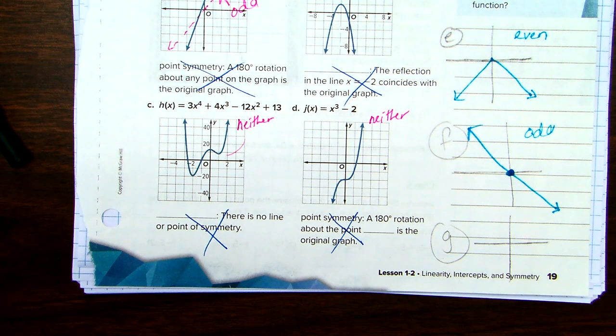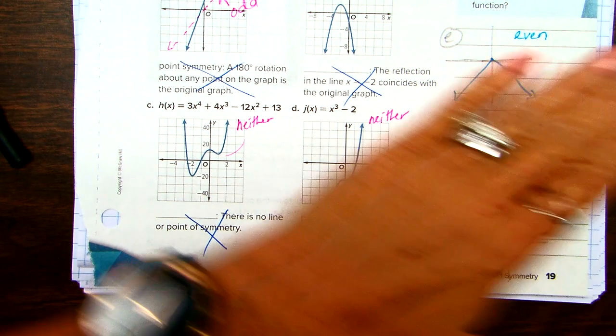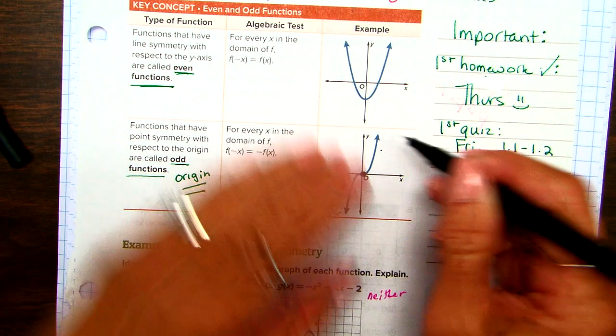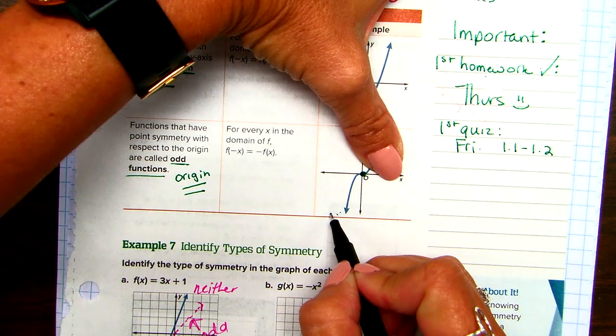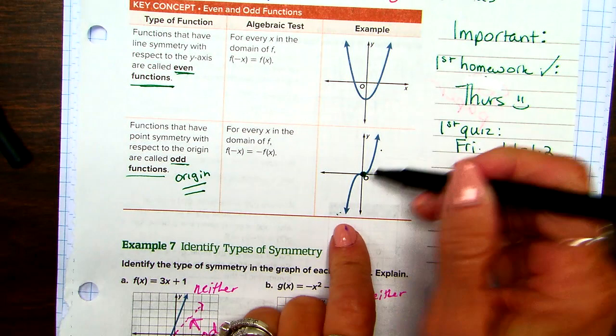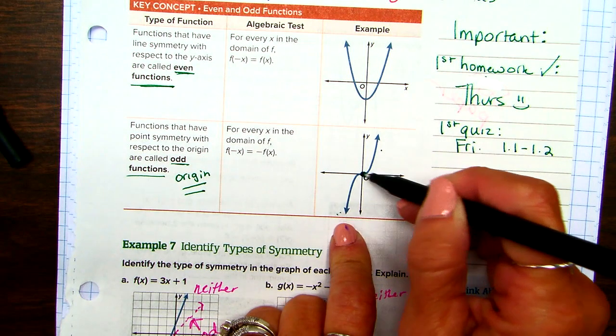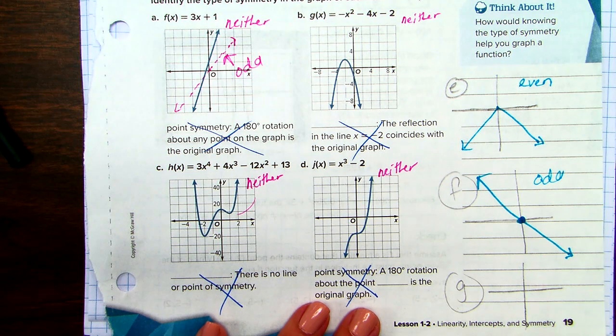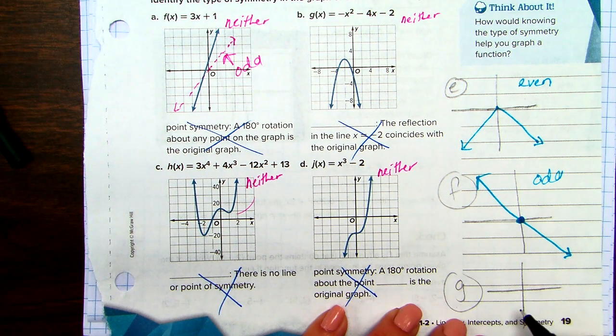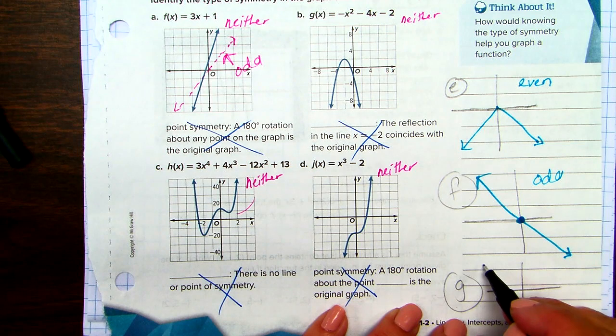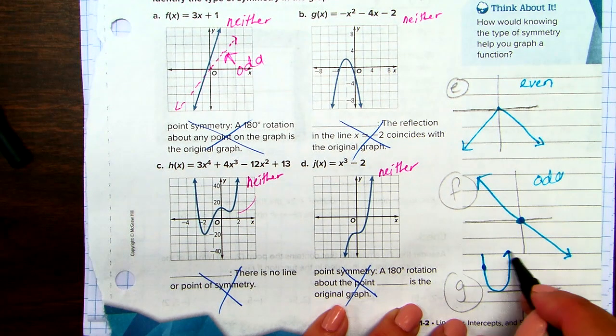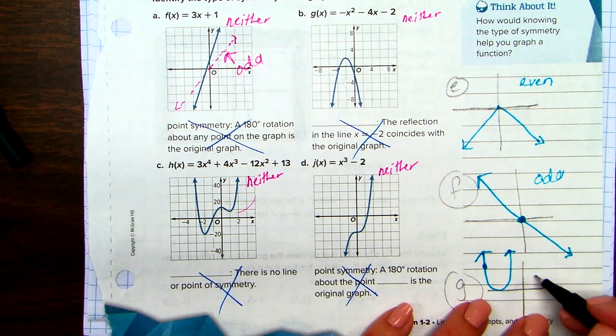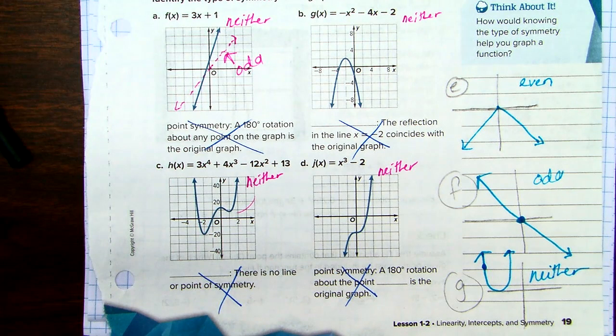And I'm sketching here. Assume this is a really nice, pretty, straight line. What do you guys say about that one? Odd. This is odd. Look. It goes right through the origin, and opposite quadrants are the same. Pretend it's a straight line.